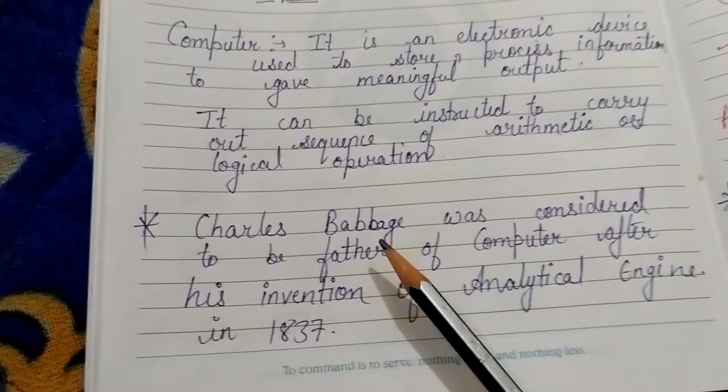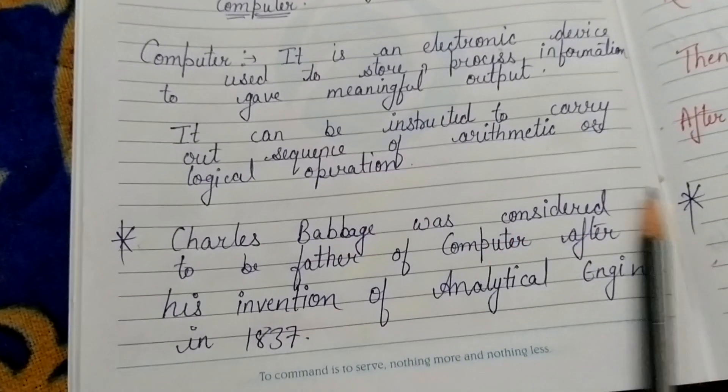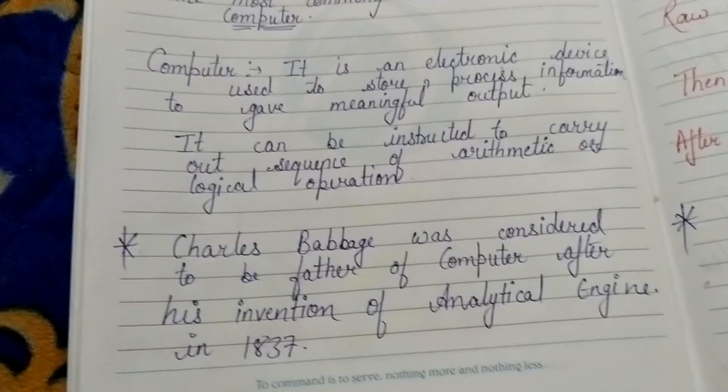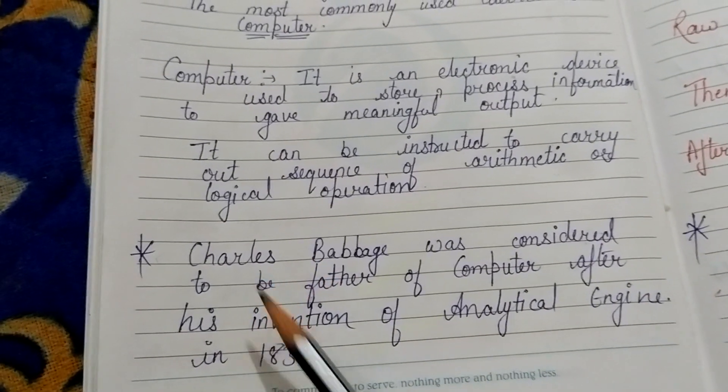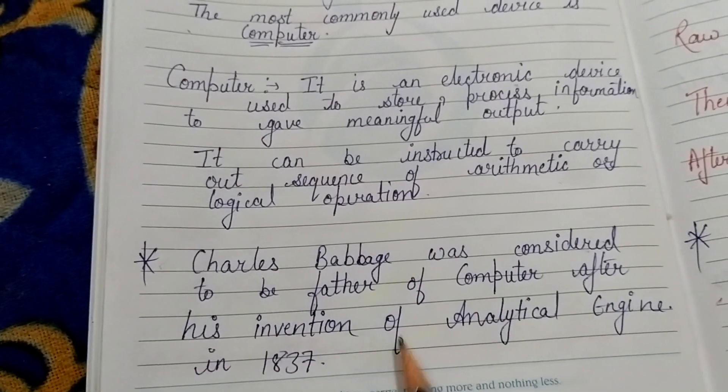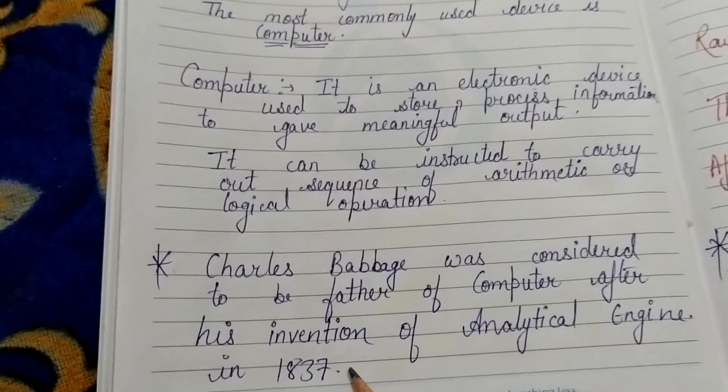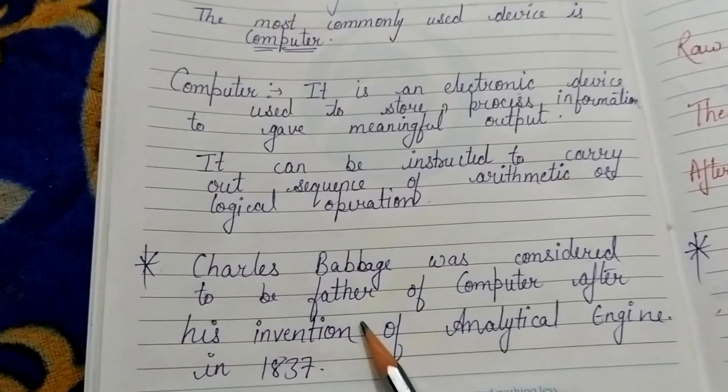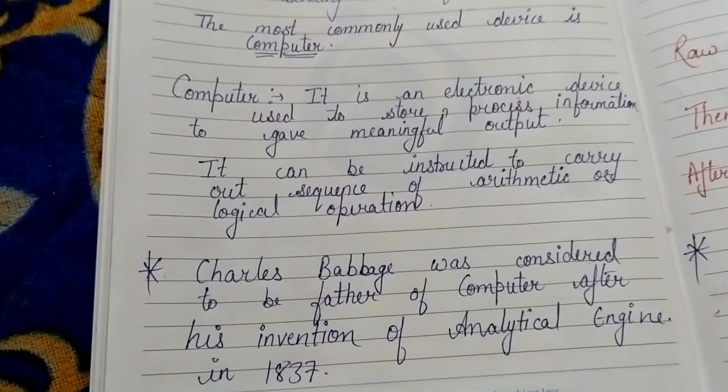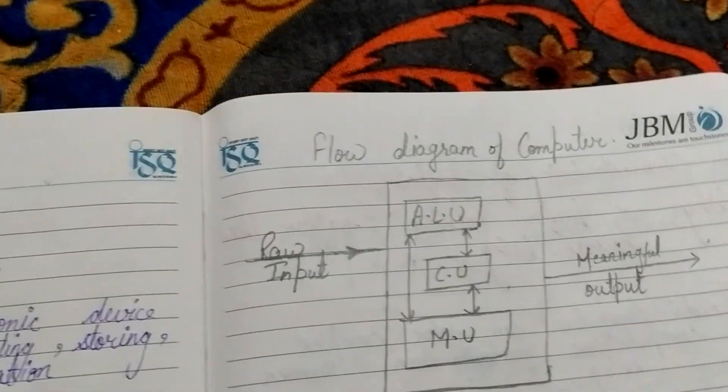Then we will make a note point with a star: Charles Babbage was considered to be the father of computer. Many others also invented computers, but the first father was Charles Babbage, who invented the computer like the analytic engine which is used for computation. He invented it in 1837, which is why Charles Babbage is considered the father of computer. If you want to add any additional note points from your side, you can do that. There's no problem if you're using internet or any book, but these points should be in your notebook.